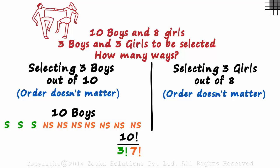If you are not sure about how we got this, please go through our video based on anagrams and you will surely get a better idea. Now we can move on to the second part of selecting 3 girls out of 8.